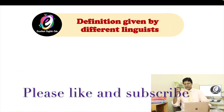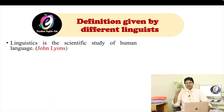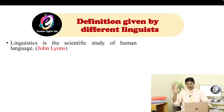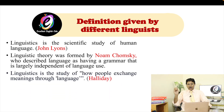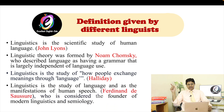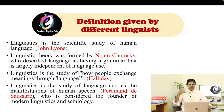Now let me discuss some definitions of linguistics given by different linguists. Number one: linguistics is the scientific study of human language, given by John Lyons. Number two: linguistic theory was founded by Noam Chomsky, who described language as having a grammar that is largely independent of language use. Another definition: linguistics is the study of how people exchange meaning through language, given by Halliday. And the last one: linguistics is the study of language as the manifestation of human speech, given by Ferdinand de Saussure, who is considered the founder of modern linguistics and semiology.